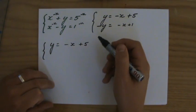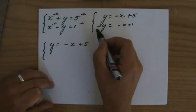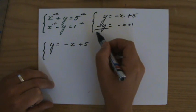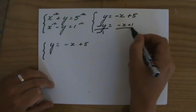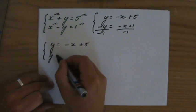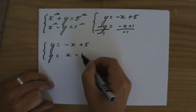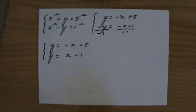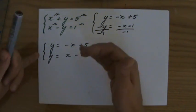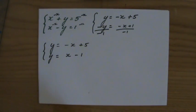To get rid of the minus sign, I can divide everything by minus 1, both sides. The result is that all the signs will change on the right side of my equal sign, so positive x minus 1. Both equations now are written in gradient-intercept form.